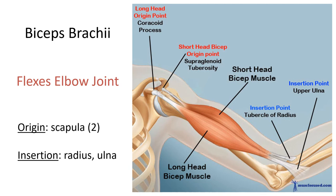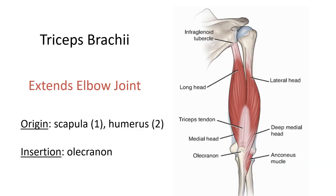The biceps brachii have two origins, each on the scapula. The main insertion is onto the radius — there's a little tubercle where it attaches — but there's also a sheet of connective tissue attaching onto the ulna as well. When this muscle contracts, it flexes the elbow joint, decreasing the angle of the elbow joint. On the other side, the triceps brachii extend the elbow joint — they straighten out the arm. We have three origins — hence the tri — one on the scapula and two on the humerus. The insertion is the olecranon, that bony bit that sticks out from the ulna.